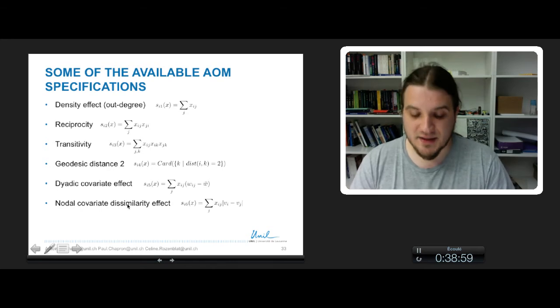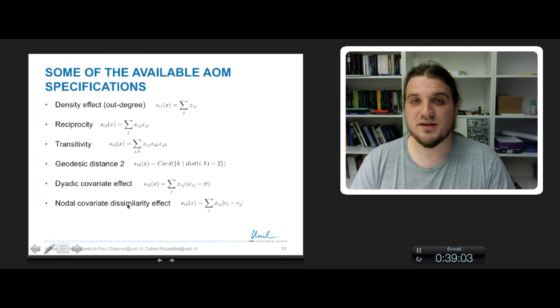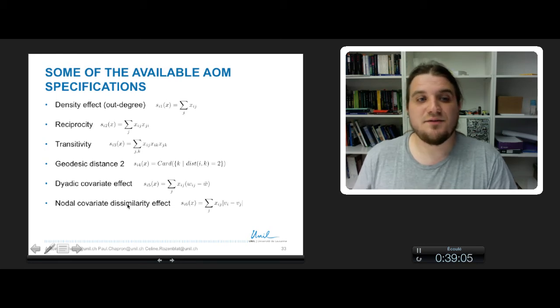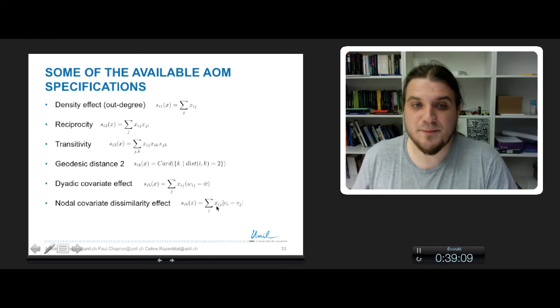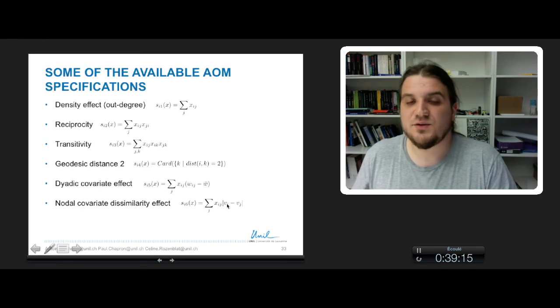to represent the fact that there is more chance of a link between two nodes i and j if their variable v is very different. So this is modeled by this kind of effect, so for every link between i and j, this quantity will be high if there is a big difference between the variable of the node i and the variable of the node j.